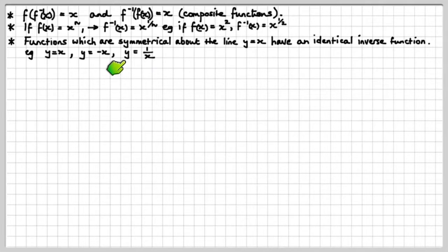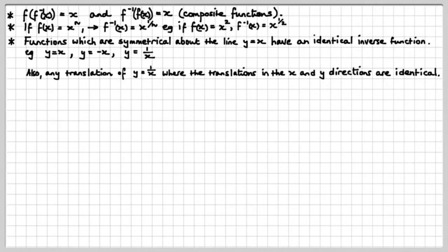This is a rectangular hyperbola. That one is also symmetrical about the line y equals x. Also, any translation of that rectangular hyperbola where the translation is the same in the x and y directions, you'll also produce a rectangular hyperbola which is still symmetrical about the line y equals x and therefore the inverse is the same as the original.